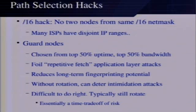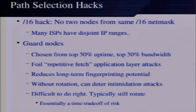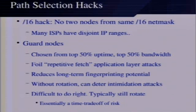Path selection hacks: the /16 hack means no two nodes in your path can be from the same /16 netmask. The idea is to mitigate Sybil attacks — someone running multiple nodes from a colo provider or cable modem. This prevents them from having a large number of nodes on their network that can actively compromise users. It also prevents ISPs from easily surveilling traffic, though larger ISPs have disjoint IP ranges not always in the same /16.